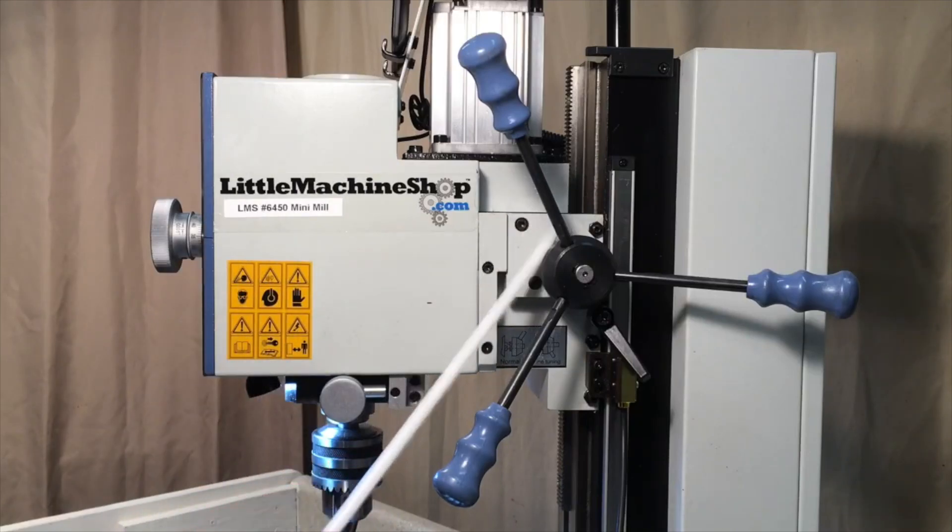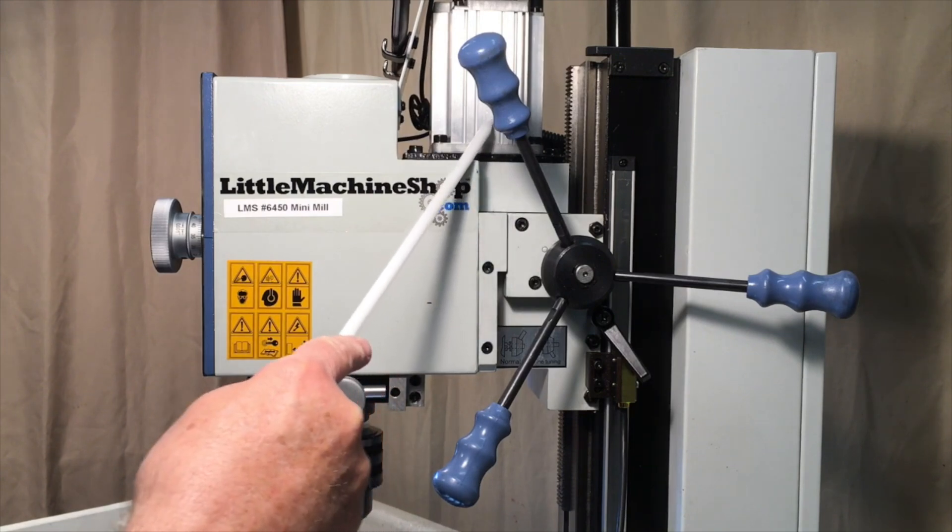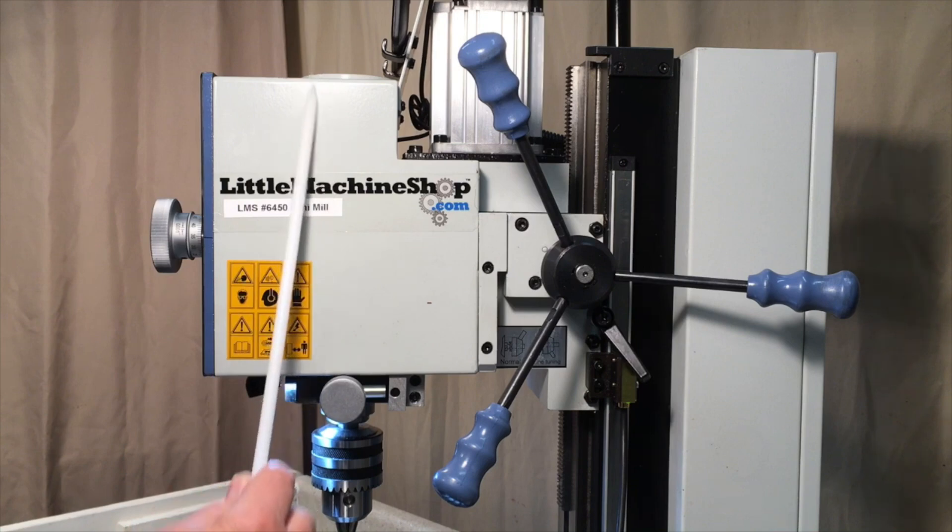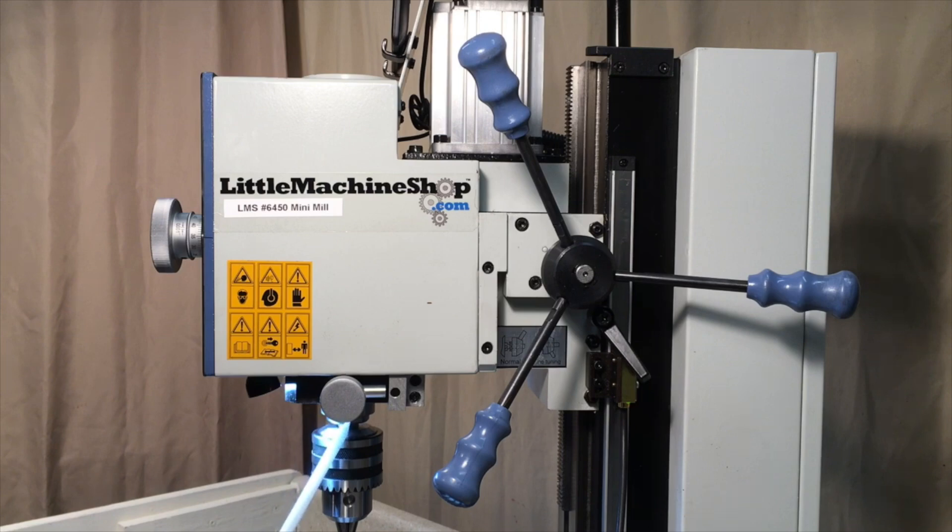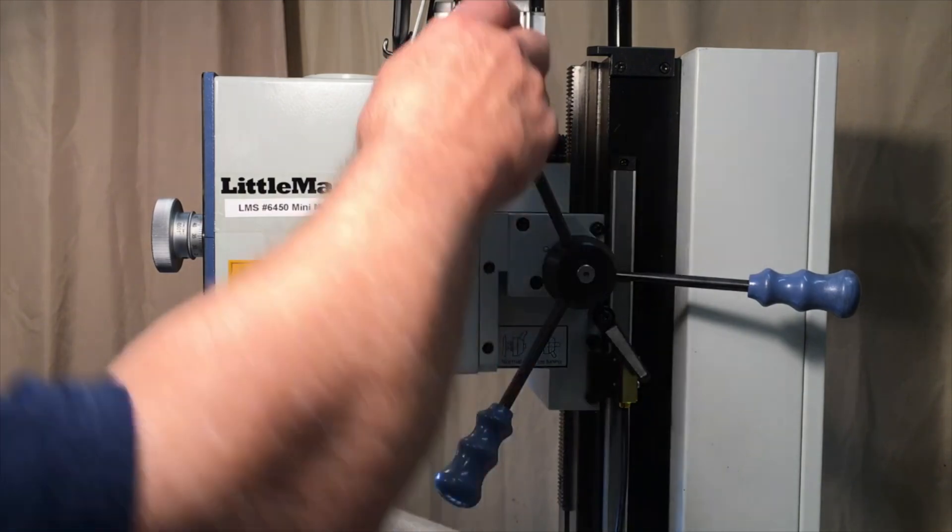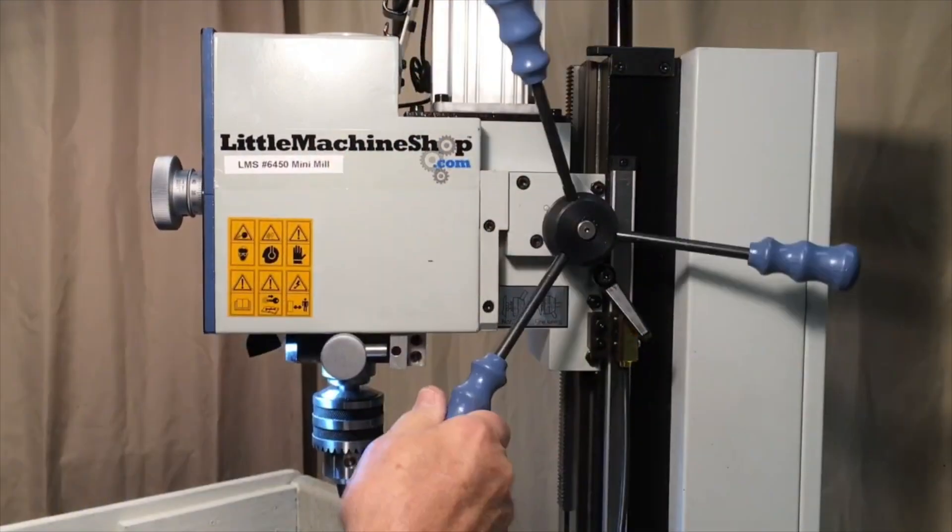This whole assembly here is called the head. Mounted on top of the head is the motor, and it has a belt drive that runs from the motor over to the spindle. The spindle is a hollow shaft that runs through the center of the mill, and tools can be inserted into the spindle. For example, this Jacobs-style drill chuck, but this is where you would also insert your end mills or other tools. Back here we have the column and the three-spoke hand wheel, and by turning the three-spoke hand wheel we can move the head up and down on the column.